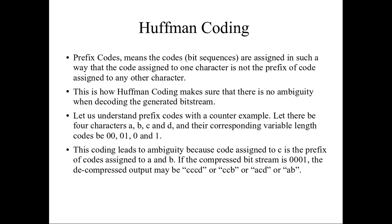Just as an example, suppose you are sending a message containing characters a, b, c, d. When you are sending a message like this, each character will be given a bit number — for example, a is given 00, b is given 01, c is assigned 0, and d is assigned 1. So you will be receiving the message in bits before it is received by the receiver.